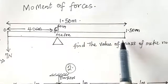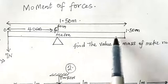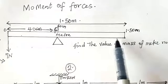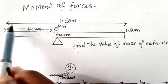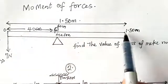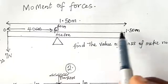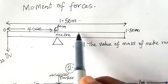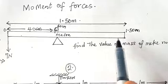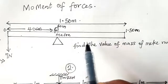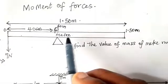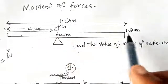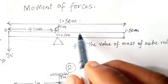They say we should find the mass of the meter rule. Now, in a normal concept of a uniform meter rule, if from here to here is 1.5 meters, the weight of the meter rule will be at the center of gravity. The center of gravity is the point where, if I divide this 1.5 into 2, that point becomes the center of gravity.